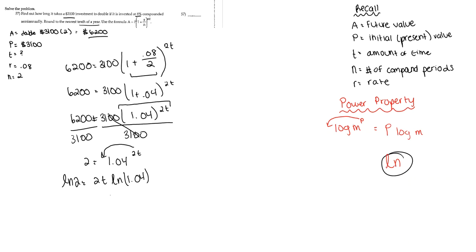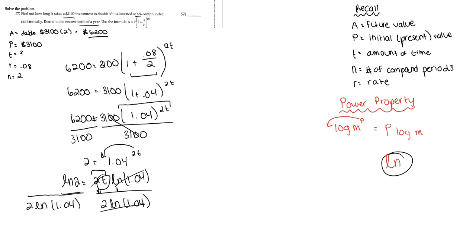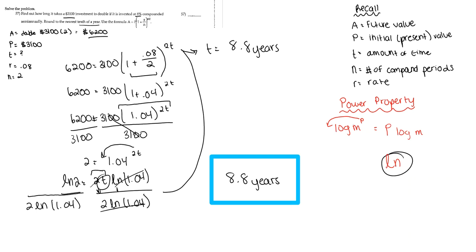To isolate T, we divide both sides by 2 times LN(1.04), so that T equals LN(2) divided by 2 times LN(1.04). Entering that into the calculator gives 8.8. Rounding to the nearest tenth of a year, the final answer is 8.8 years — that is how long it takes the investment to double at 8% compounded semi-annually.